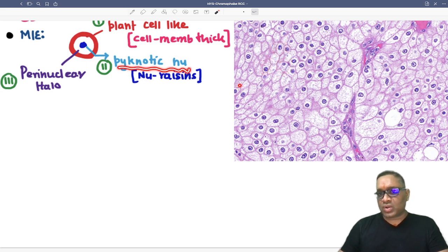Pyknotic nuclei, you can see the nuclei is pyknotic. They are very small and dark. That is also called nuclear resins and perinuclear halo. Around this, you can see the perinuclear halo is also visible in all these cells.